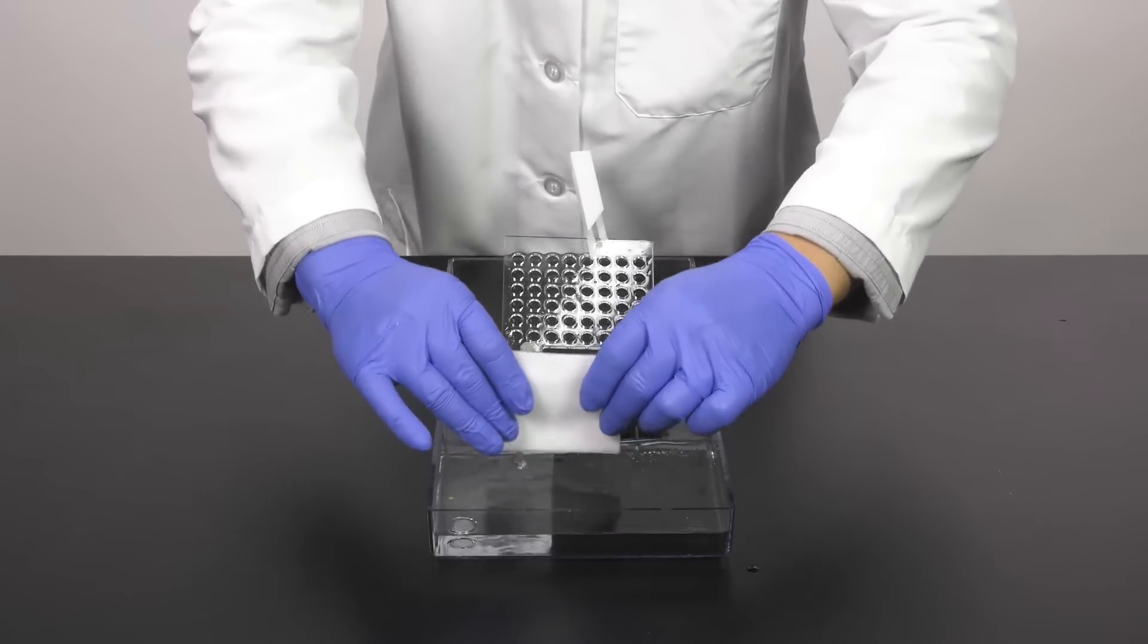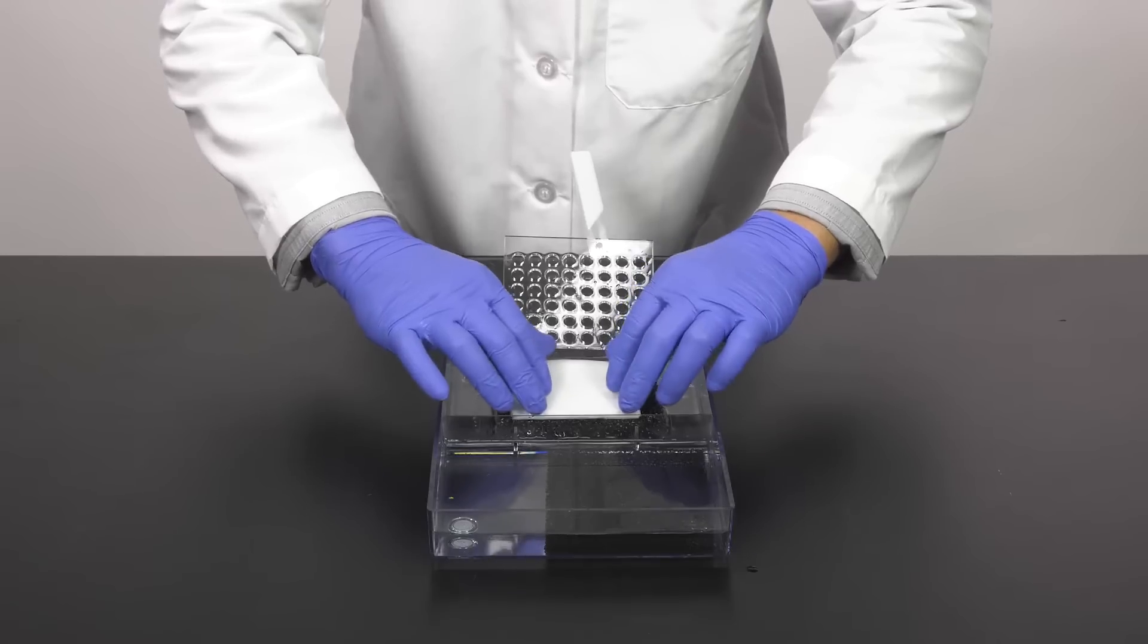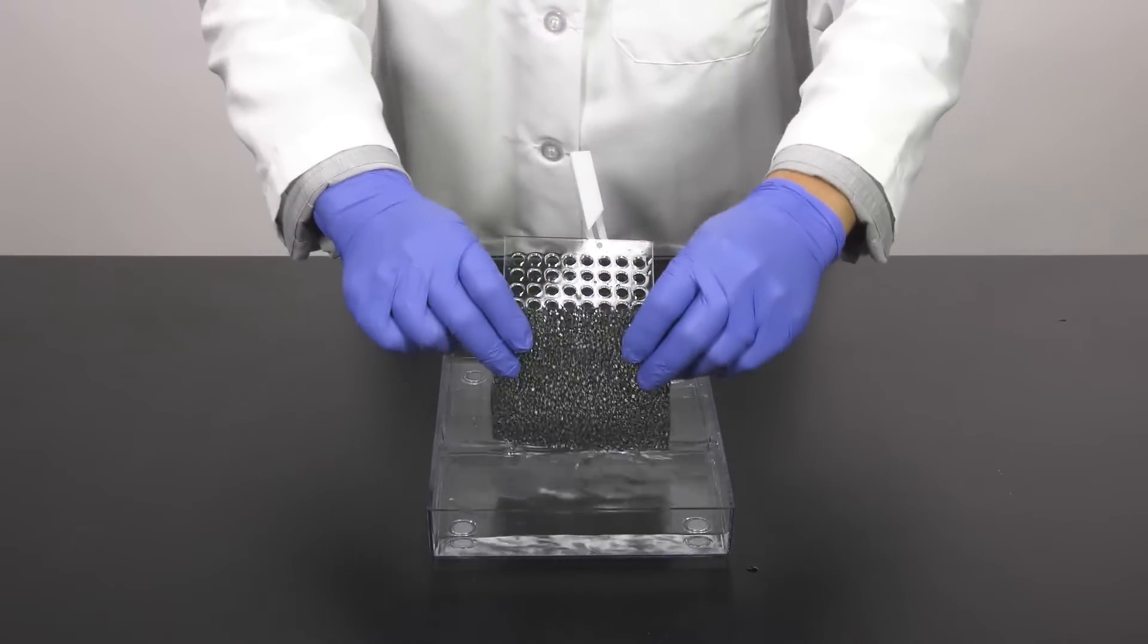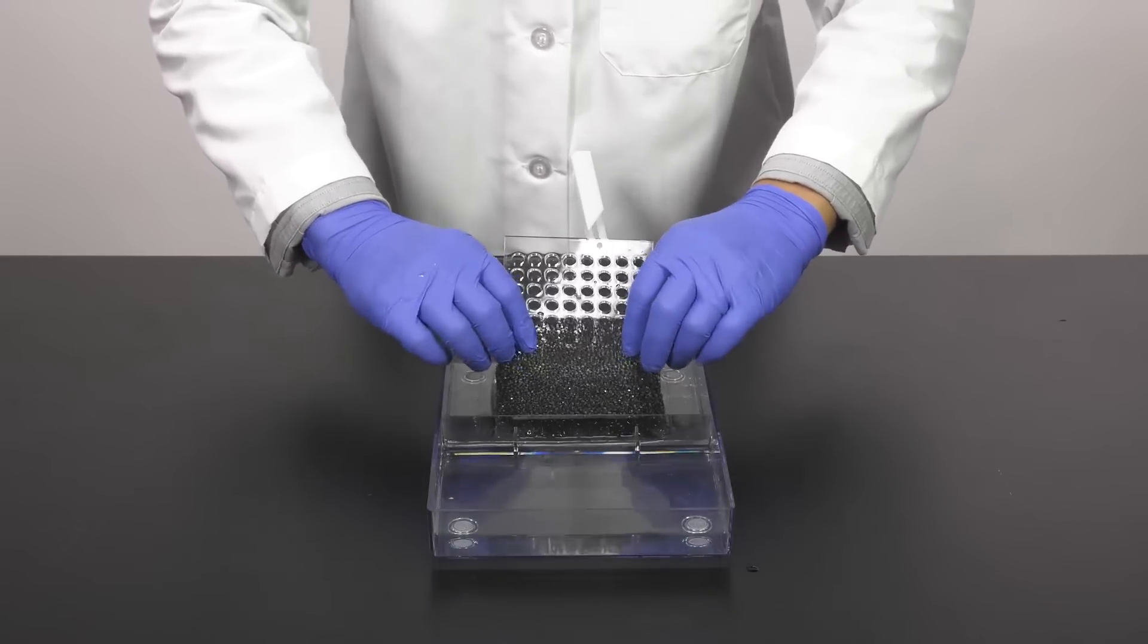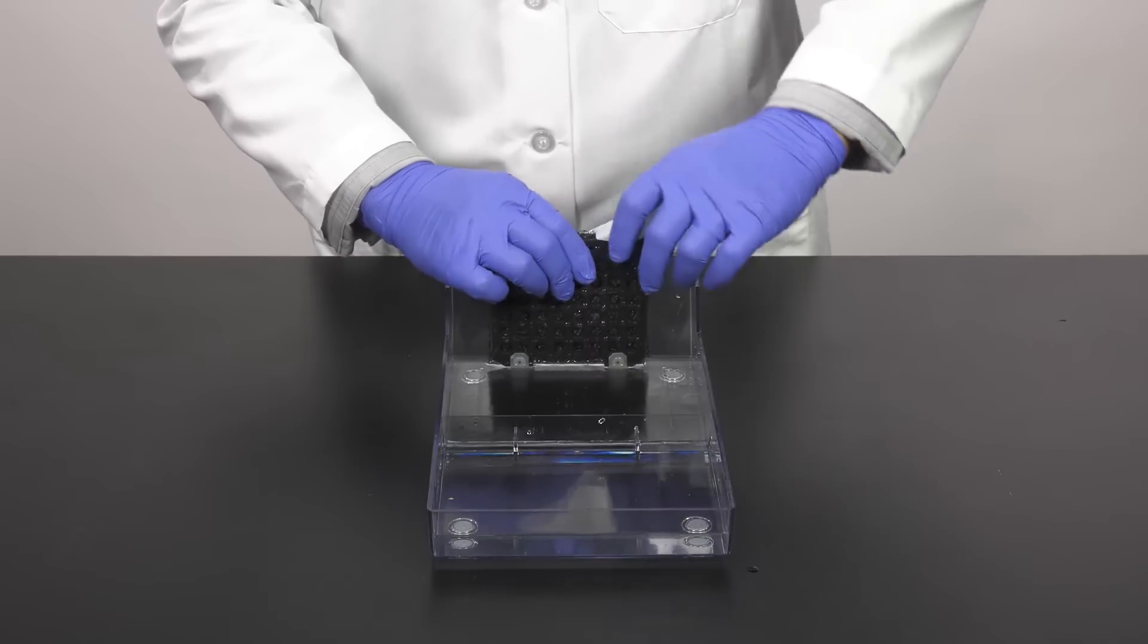Place a second sheet of blotting paper on top of the membrane, then the final fiber pad on top to complete the sandwich. Close the gel holder and secure it with the sliding clamp.